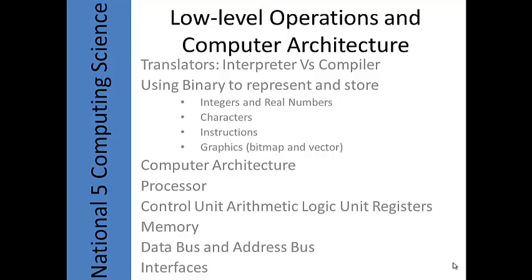You need to know about the data bus and address bus. The data bus carries data from the processor to main memory and back from main memory to the processor when the control unit commands it — it is bidirectional. The address bus points at the memory location being accessed — it is unidirectional, only sending data out from the processor.